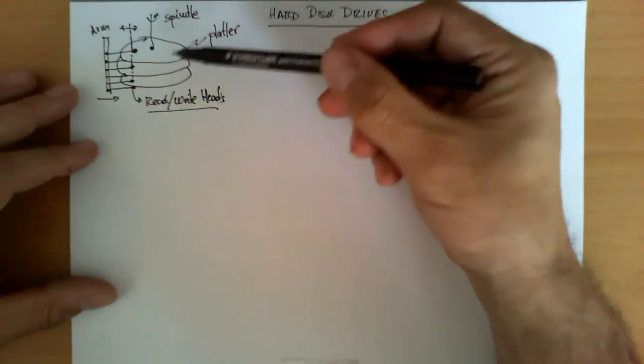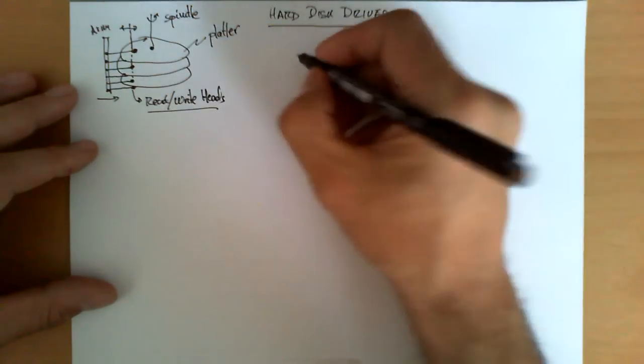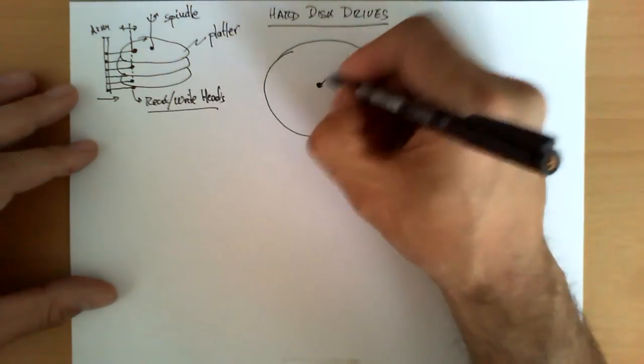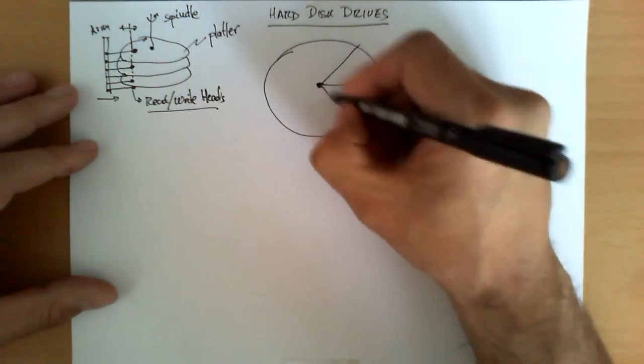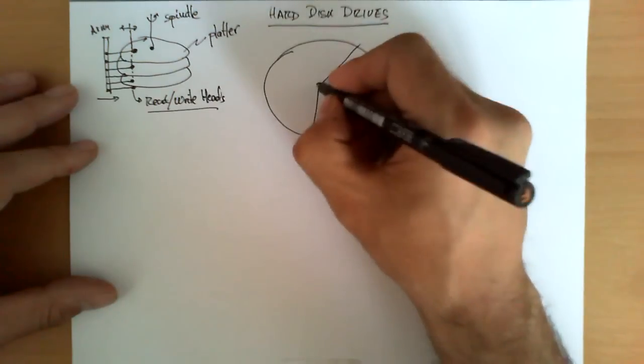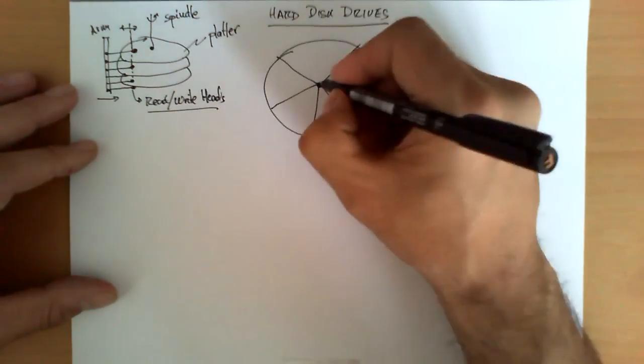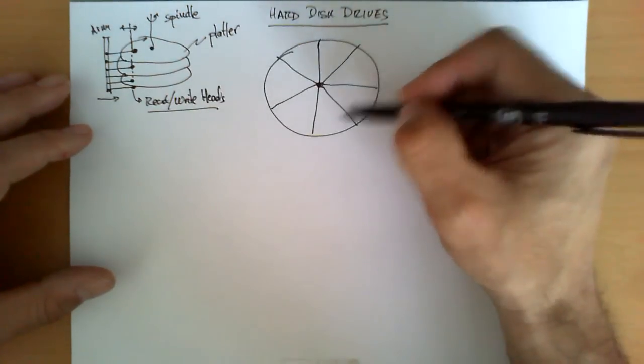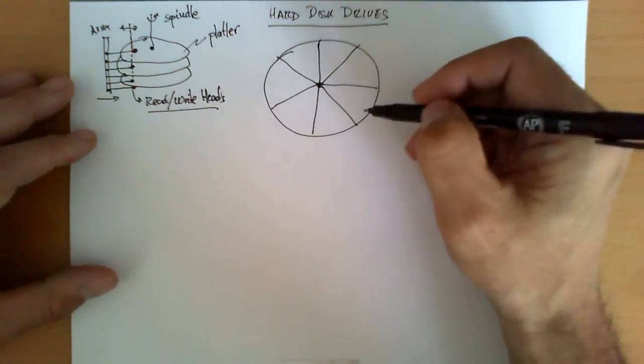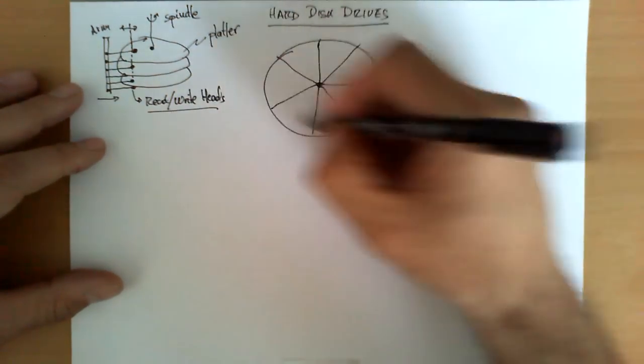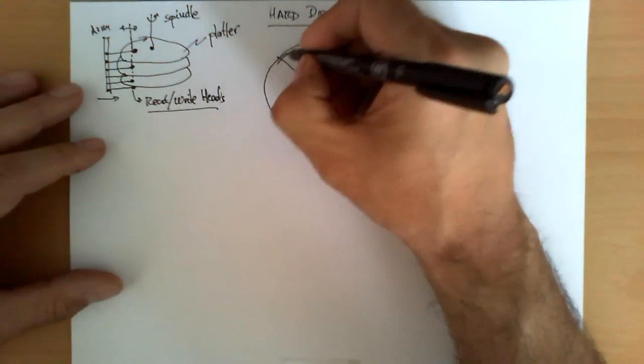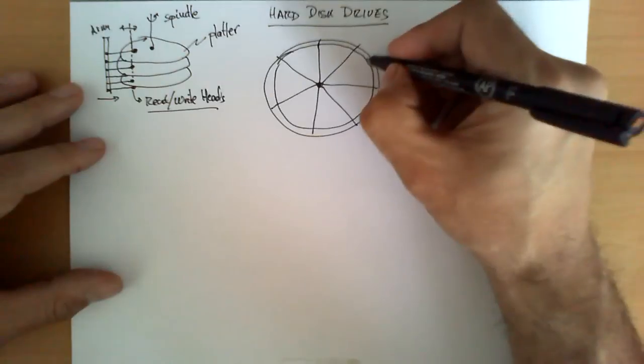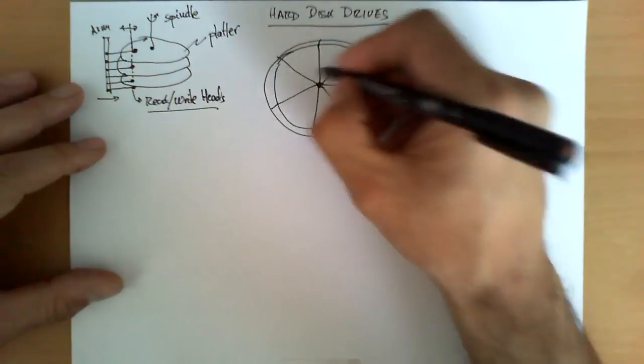If you look at one of these platters from the top, we can see that it is divided into a certain number of areas. The number of areas of this division depends from manufacturer to manufacturer, but in principle, the area is divided in portions like this. Each one of these surfaces in both sides, what we have here, like concentric circles, is the notion of a track.